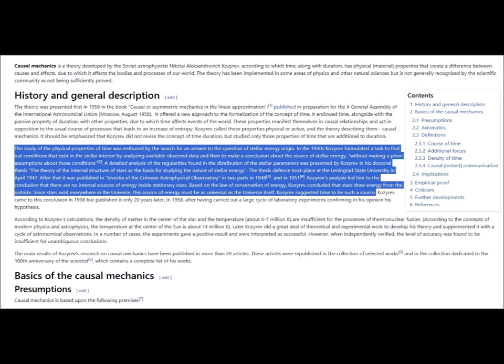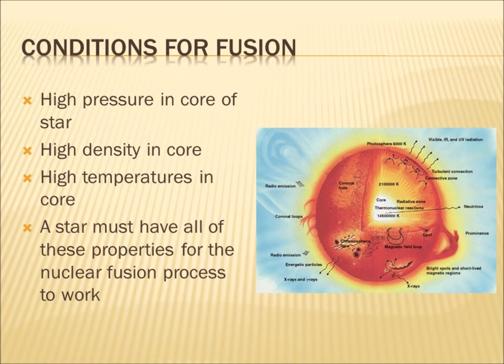Kozyrev's work led him to the conclusion that there are no internal sources of energy inside stationary stars. Based on the law of conservation of energy, he concluded that stars draw energy from the outside. He further concluded that since stars exist everywhere in the universe, this source of energy must be as universal as the universe itself, suggesting that time itself was that source.